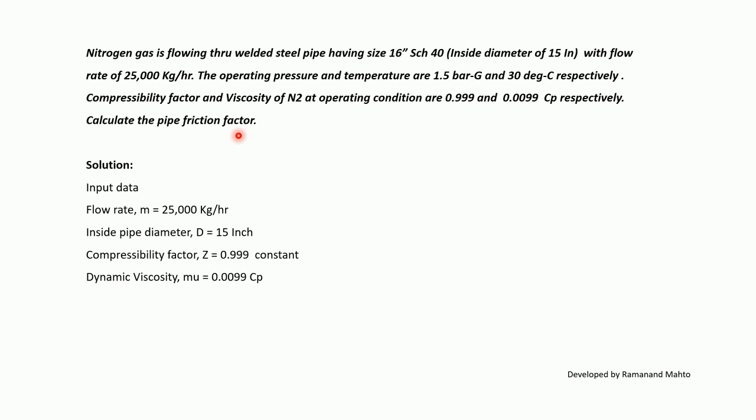Solution – Input data: Flow rate M = 25,000 kg/hr (given). Inside pipe diameter D = 15 inches (given). Compressibility factor Z = 0.999 (given). Dynamic viscosity μ = 0.0099 cP (given).